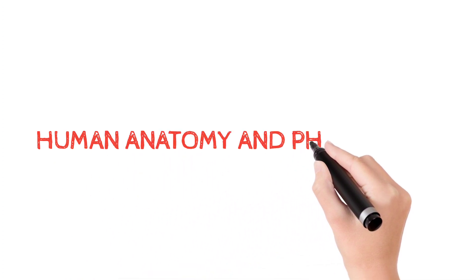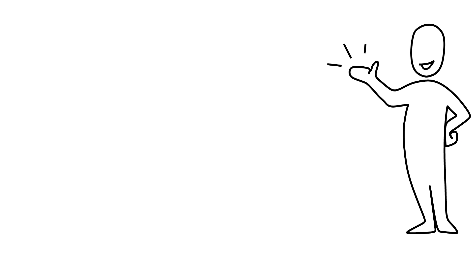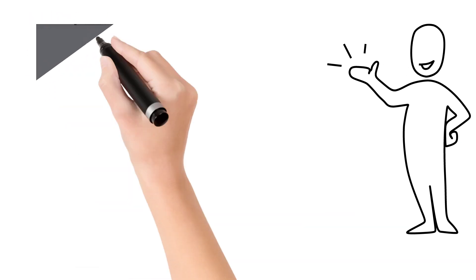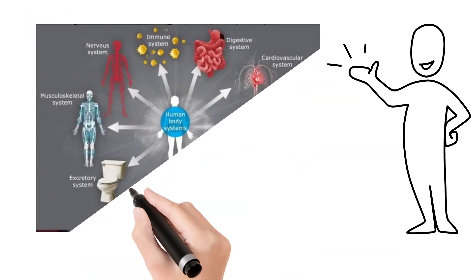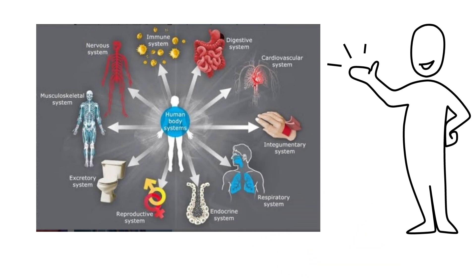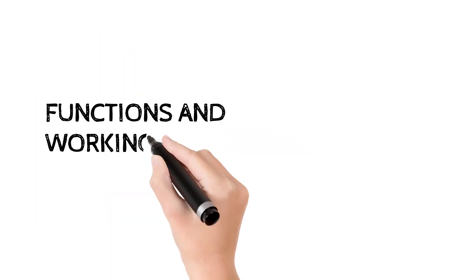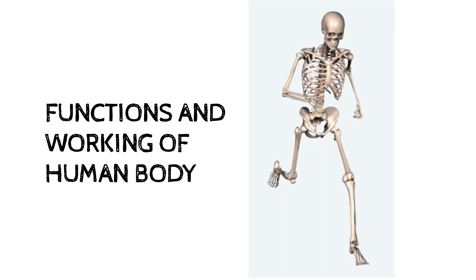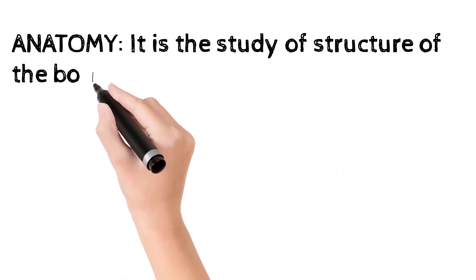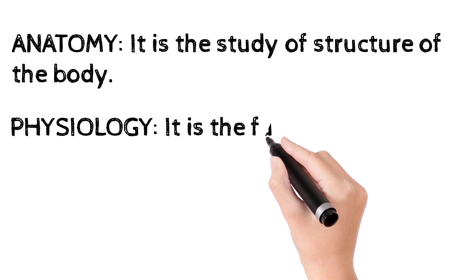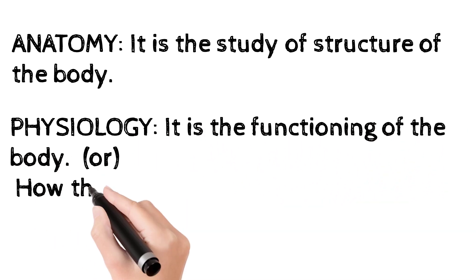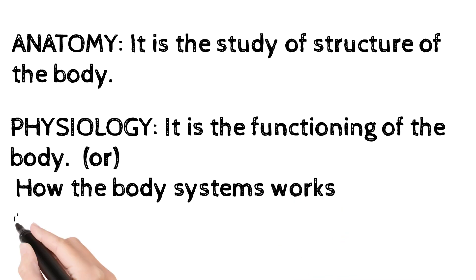Human anatomy and physiology — we all know the human body consists of several systems, and each system has its own functioning. To know all these functions and the working of a human body, we study anatomy and physiology. Anatomy is the study of the structure of the body, and physiology is the study of how the body systems work together.